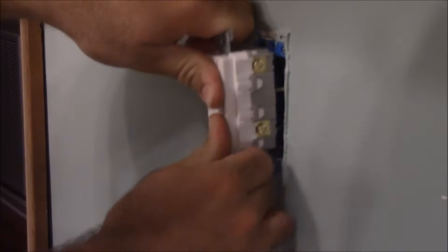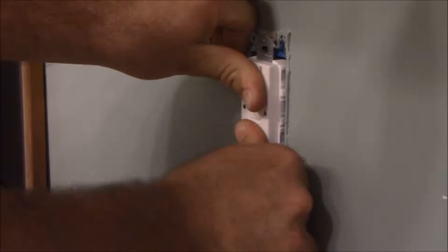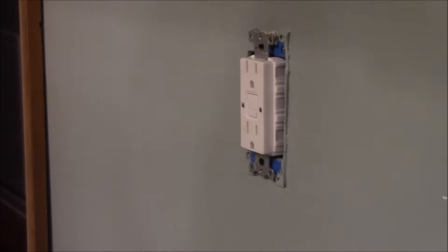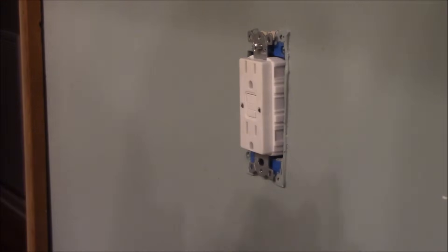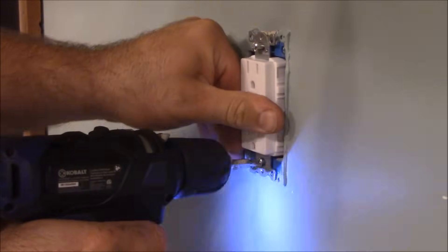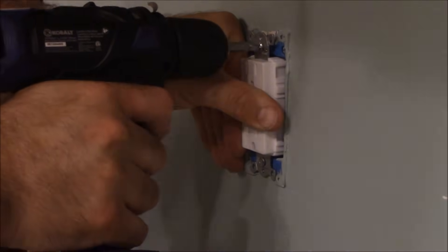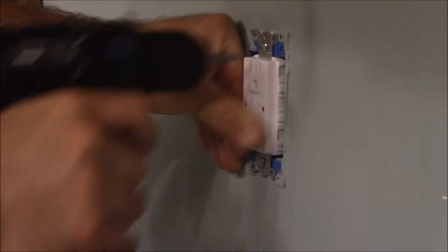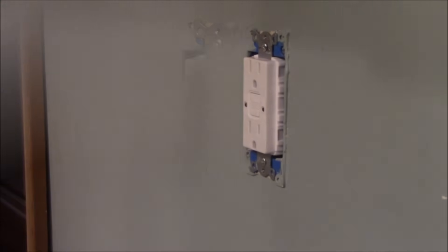Now we're just going to take these wires and push them back in here. Just like so. Now we're going to put our screws in that hold the receptacle in the box. I like to get the top one about halfway, and then start the bottom.